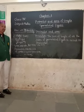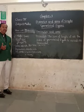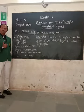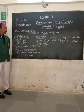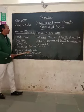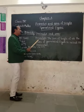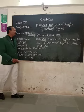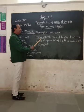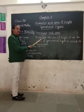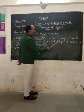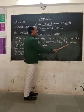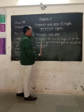Yesterday we learned what area is and how to identify it. But today, I will teach you how we identify perimeter from a plane figure. Perimeter — perimeter means the sum of the lengths of all the sides of a geometrical figure is called its perimeter.